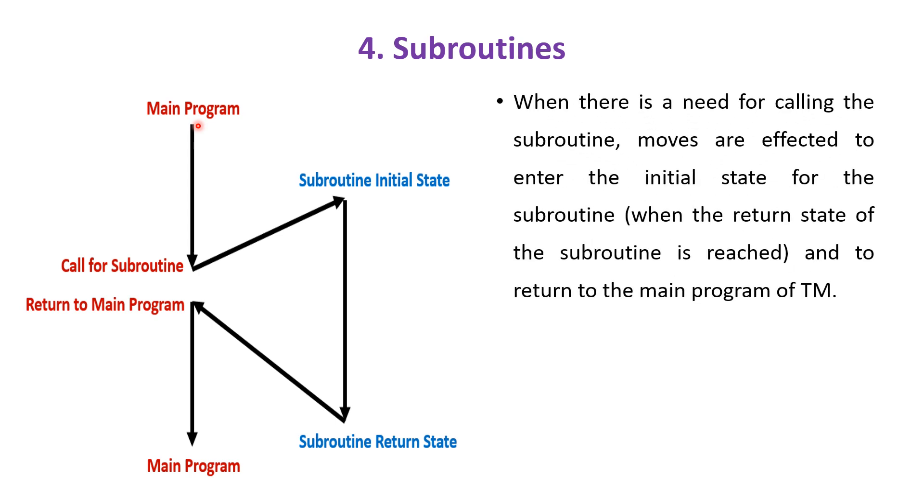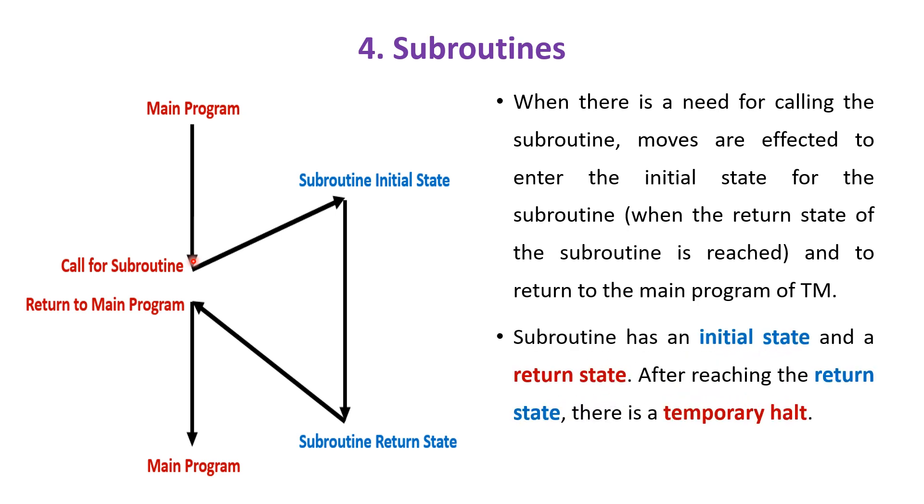For using subroutines we go for introducing new states. In the main program of a Turing machine, if there is a call for a subroutine, then it enters into the initial state of the subroutine, and on entering into the return state of the subroutine, it returns back to the main program of the Turing machine. The subroutine has an initial state and a return state.